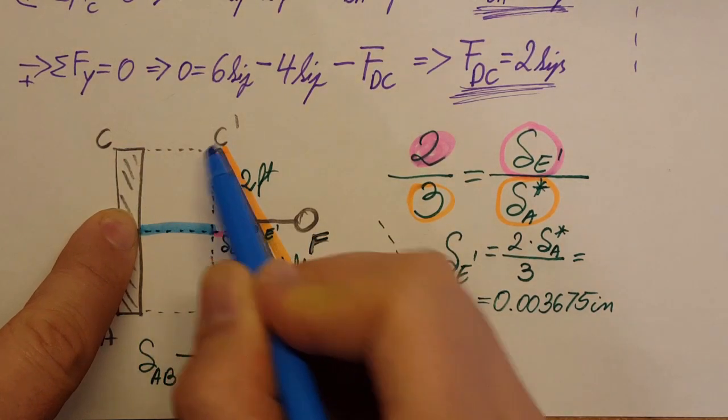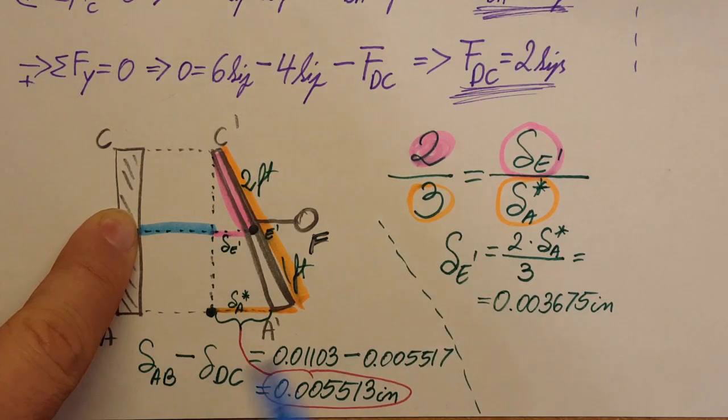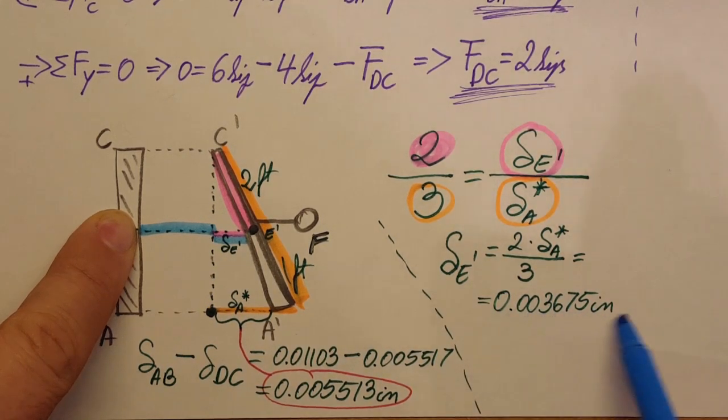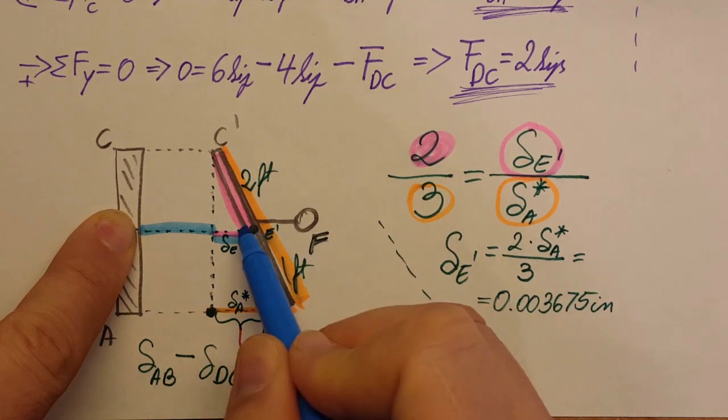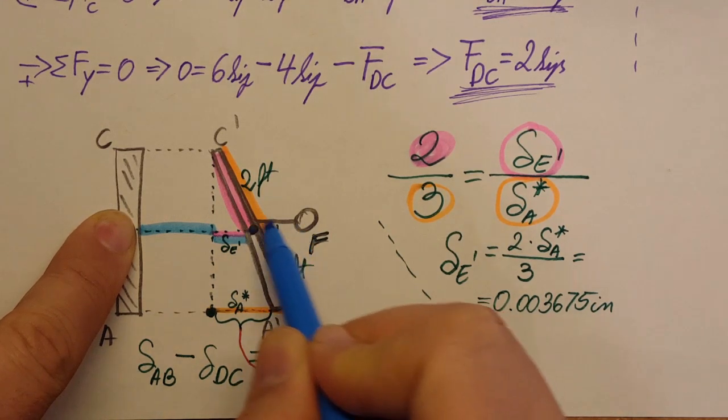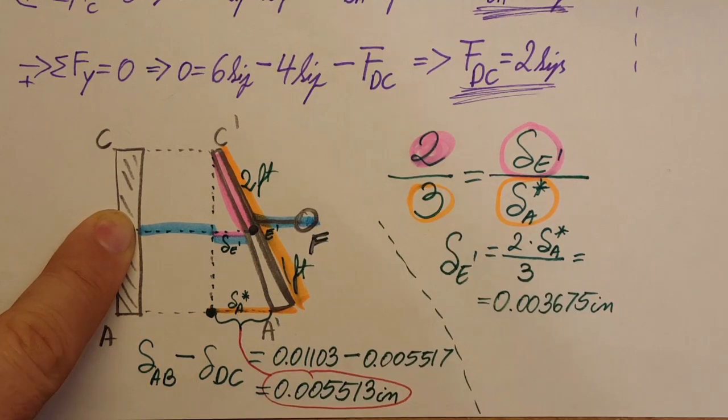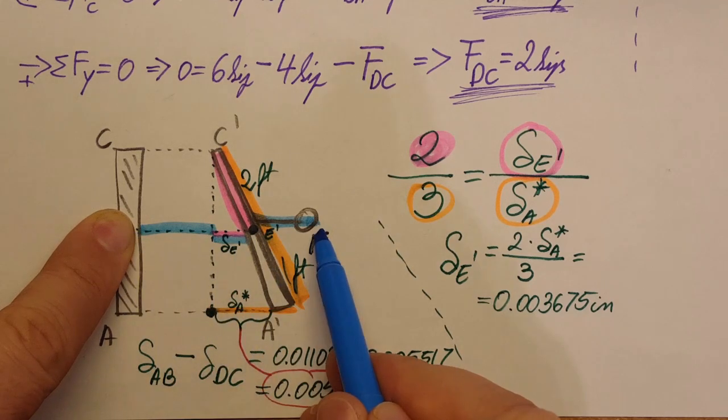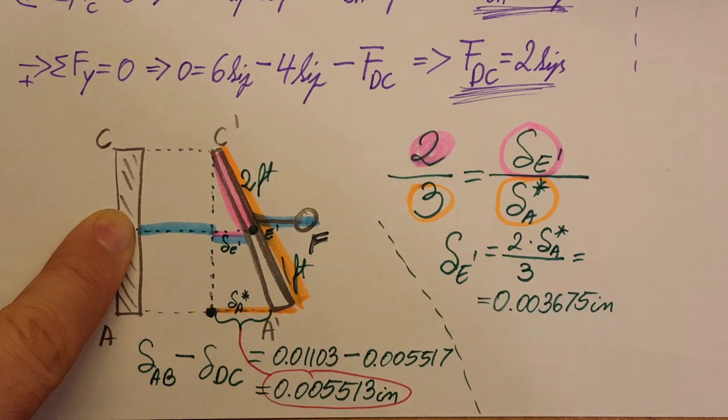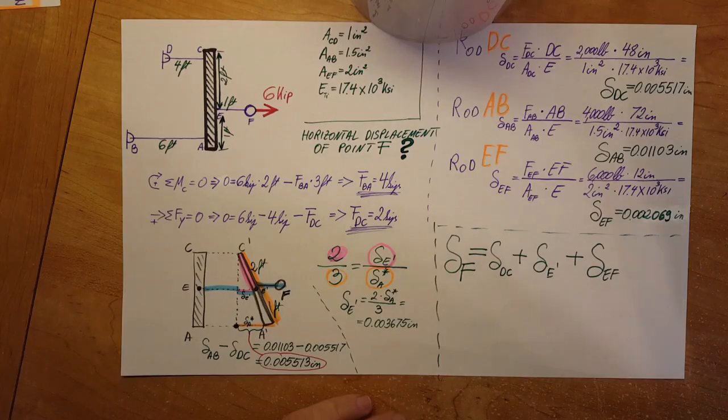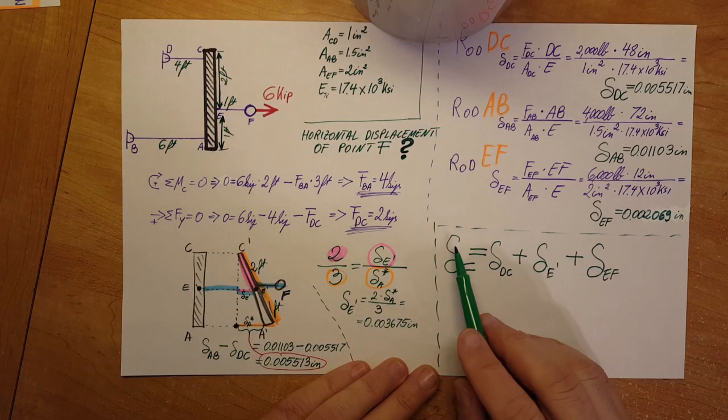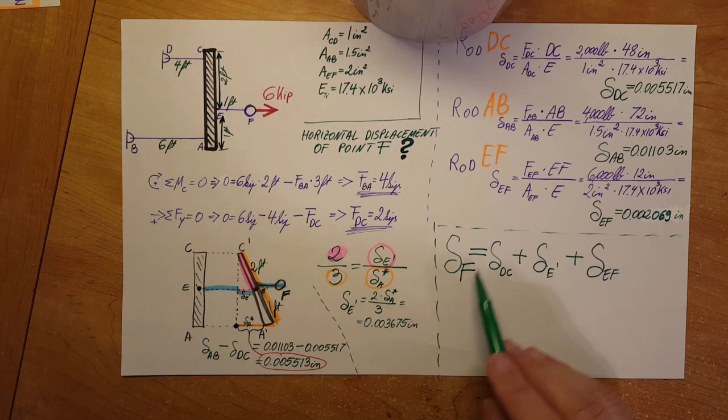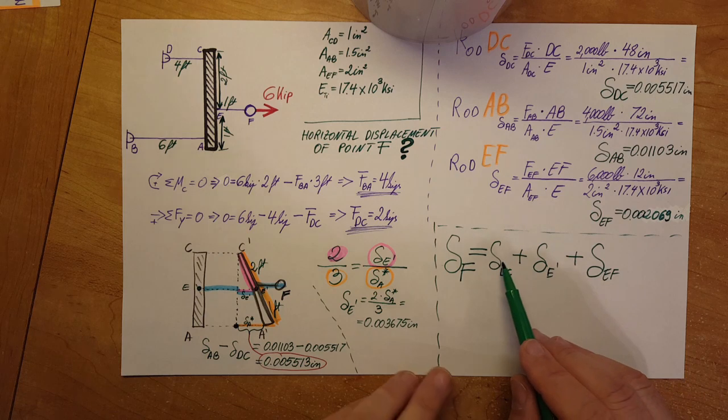And let's see what will give us this value. We have this displacement which is the same as the displacement of rod DC, we've calculated it. We have it. Now we've calculated this deflection right here. We have it. And we also had this rod EF here, we calculated it and we found that it stretched also. So simply summing up these three distances will finally give us our displacement of point F.